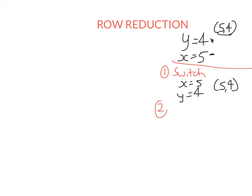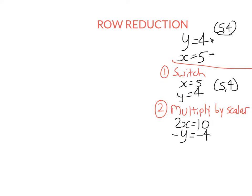Another thing I can do is I can multiply each of these equations by a scalar. That means I can multiply everything in the equation by any real number and it won't change the solution. For example, I could times the first equation by 2 and get 2x equals 10 — the solution is still x equals 5. I could times the bottom equation by minus 1 and get minus y equals minus 4, and the answer is still (5, 4).